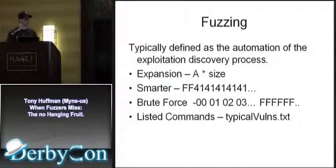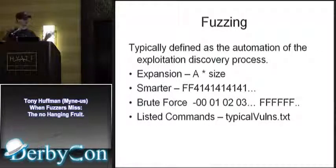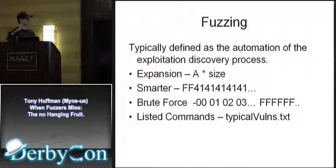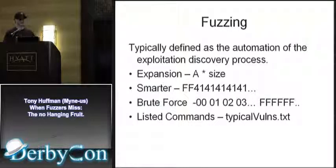You've got brute force fuzzing, which basically starts at zero and goes all the way up through 0xFFFF. You let it run as long as it can inside either a chunk or raw — that's a huge time-to-accuracy trade-off. It's extremely accurate but takes a ridiculous amount of time to run. And there are listed commands where you have normal exploits like integer wraps and normal values of integer wraps.